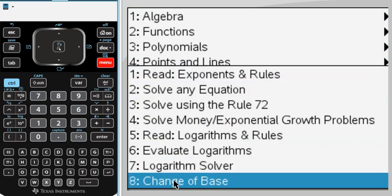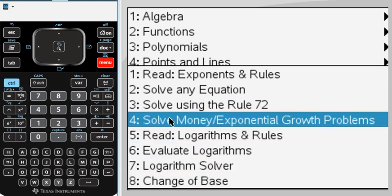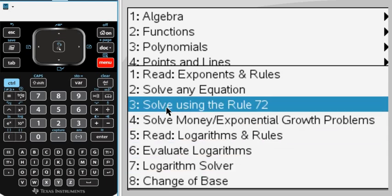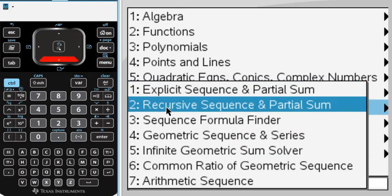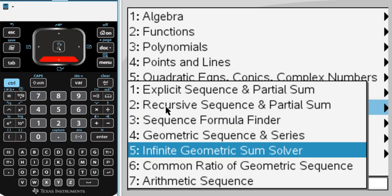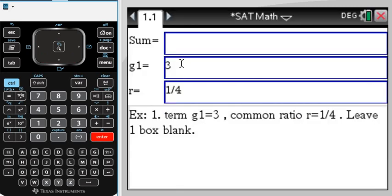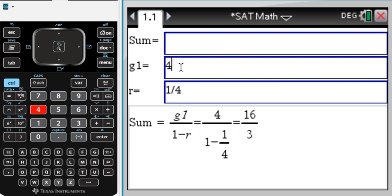Exponents and logarithms, the typical things, change of base, money, growth problems, rule of 72, etc. Sequences and series, the same thing. Let me show you the infinite geometric series. You've got to just enter your first value, G1, and the common ratio. They get plugged into the sum formula and evaluated right there. Again, if you change your input, you immediately get your output. You could also enter the sum right here and then solve for one of the other two. That would work as well.